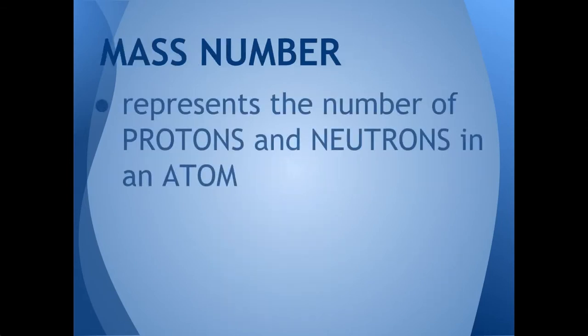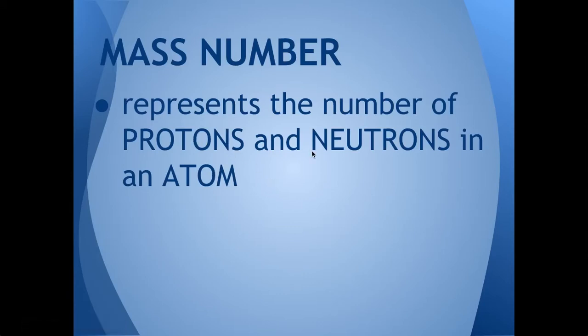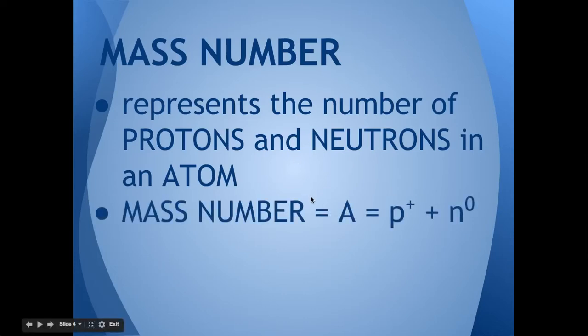Next, we're going to talk about mass number. Mass number represents the number of protons and neutrons in an atom, because these are the two subatomic particles that have mass. Electrons have such a small mass that we round it off to zero and only focus on protons and neutrons. The mass number is represented with the symbol capital A, and it equals the number of protons plus the number of neutrons.